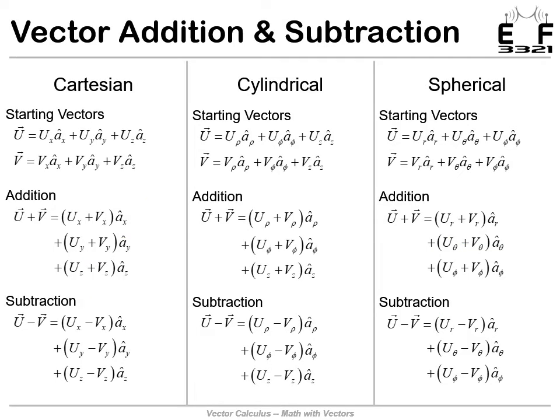In summary, no matter what coordinate system you're in, you'll just look at the individual components of the vectors and add or subtract them. That works for Cartesian, cylindrical, and spherical coordinates — it's all the same.